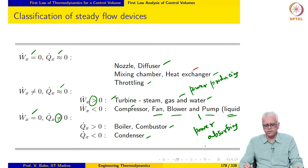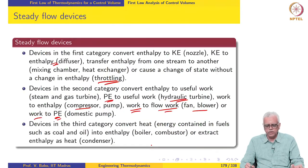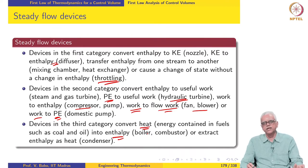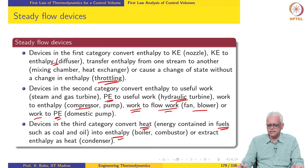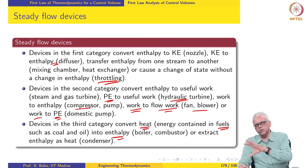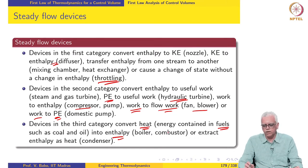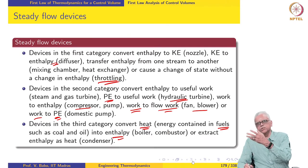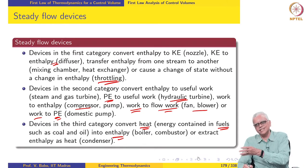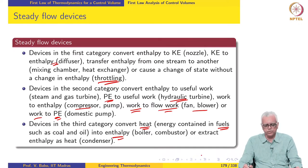Devices in the third category — boilers, combustors, and condensers — convert heat into enthalpy. Q dot is converted to mass flow rate times exit enthalpy. The heat comes from burning fuels such as coal and oil, and the calorific value of these fuels is realized as enthalpy change of the fluid. In the case of a condenser, heat is extracted from the fluid and discarded into the ambient, which causes thermal pollution. Condensers are used for cooling fluids in order to execute a cyclic process.